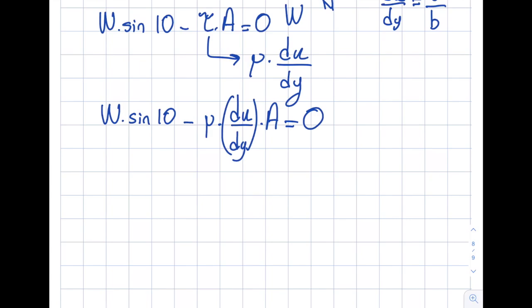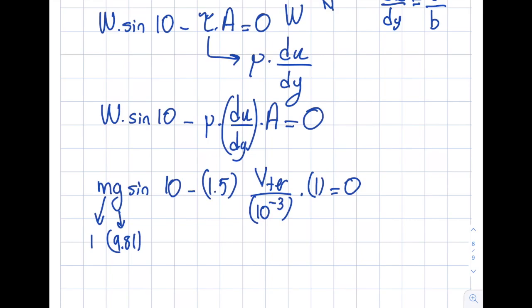So now let's write this. W, which is m times g times sin 10°, minus viscosity. Viscosity for glycerin is 1.5 Ns per m², which is the unit of dynamic viscosity, not kinematic. Then du/dy will be V terminal divided by the distance, which is given as 1 mm, so I'm converting to meters. The area is given as 1, equals 0. m is 1, this is 9.81. If you punch these numbers into your calculator, you'll obtain V terminal as 0.0011 m/s. So this is the answer to this question.